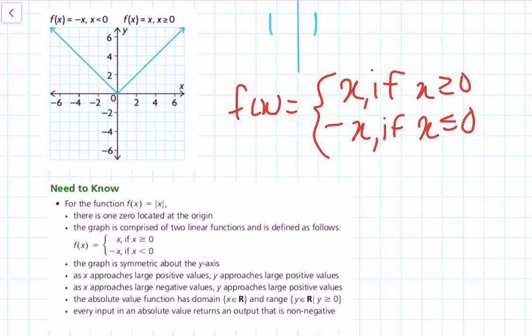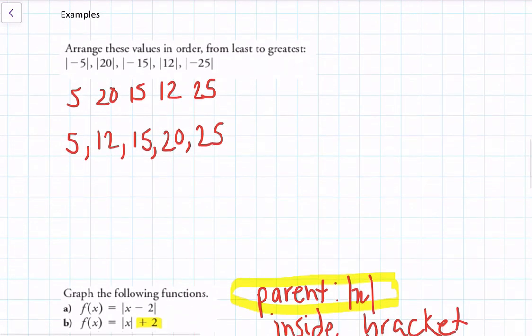Since y is always positive, no matter what x value you put in, the output will always be non-negative. Every input in an absolute value returns an output that is non-negative. So now it's time for some examples. The first one asks us to arrange values in order from least to greatest — pretty straightforward.